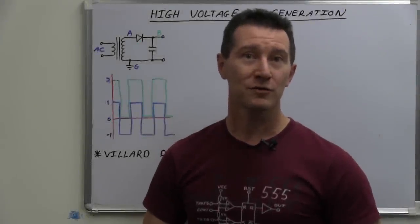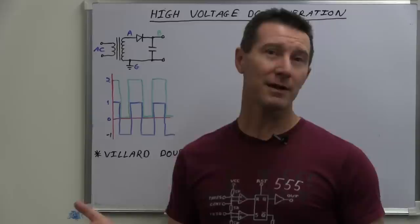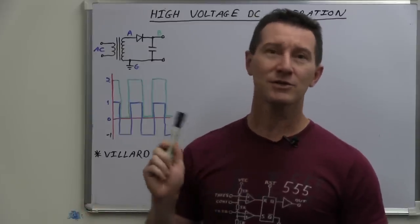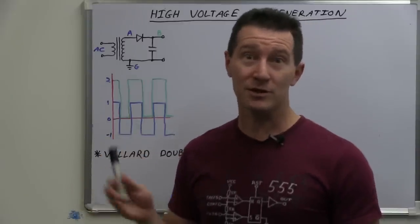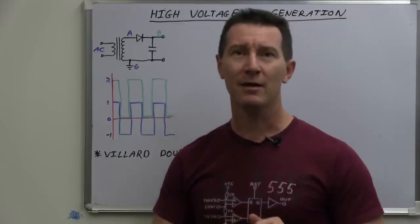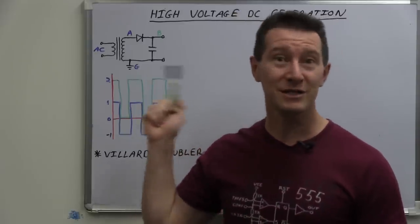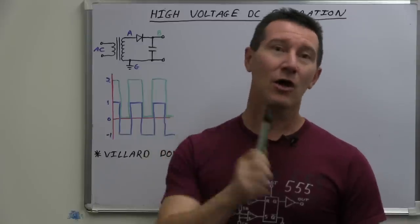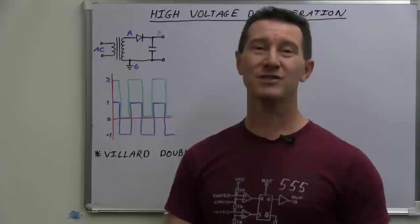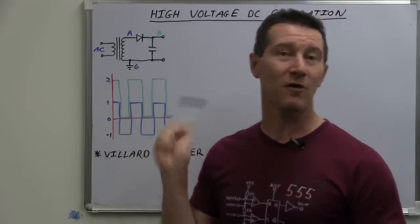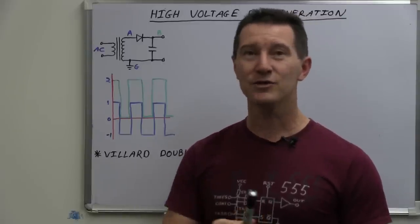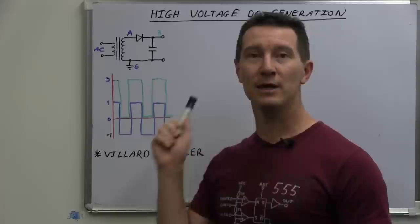Hi, welcome to Fundamentals Friday. Hopefully a regular segment, although don't hold me to it, where I explain just a little snippet of something to do with electronics — some little building block circuit or something like that. Today we're going to do high voltage DC generation. This is a follow-up from the Uni-T video I just did. If you haven't seen it, it'll be linked down below — where it generated five kilovolts DC inside, and we had a quick look at the circuit and I said I'd explain it further. So that's what we're going to do here.